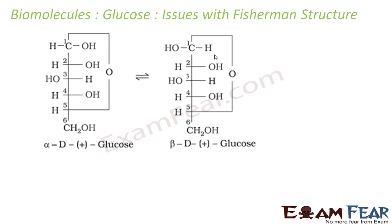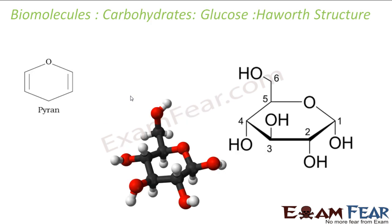We have talked about the Fischer structure, but it had some issues, and that's why chemists came up with a new structure called the Haworth structure. The first issue is confusion — you could think there are carbons at certain positions, but there is no carbon at those positions. There is a lot of confusion even with the six positions marked in the figure. So a new structure was proposed called the Haworth structure.